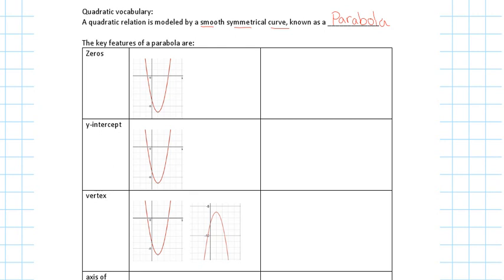Let's pretend that our face is symmetrical — if you cut your face in half, you have symmetry. Or if you have a butterfly, for example, you cut it in half, you have symmetry. Same with a parabola — if I look at a parabola and I cut it in half vertically, it's a symmetrical shape, so on both sides I have the same shape. It's smooth; it doesn't have different sharp points. It's a smooth, symmetrical curve.